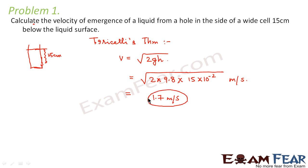So this is the velocity with which the liquid will be emerged from the side of this wide cell. So I hope you understood why we used this formula because this cell is open to atmosphere, so we are applying the Torricelli's theorem.